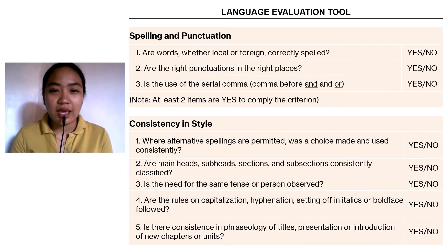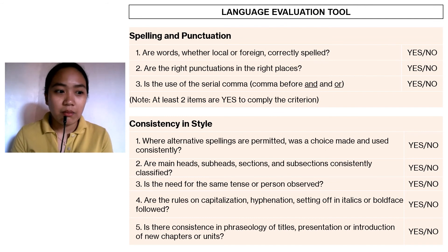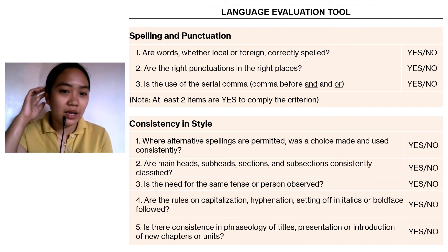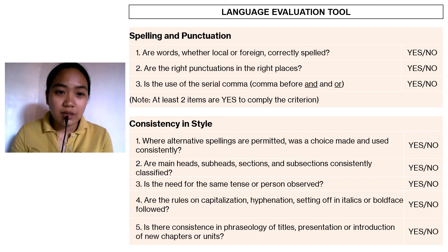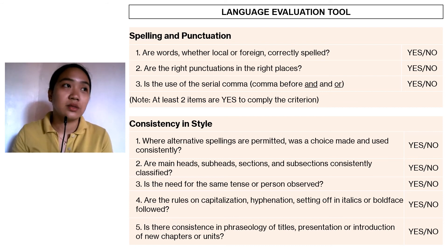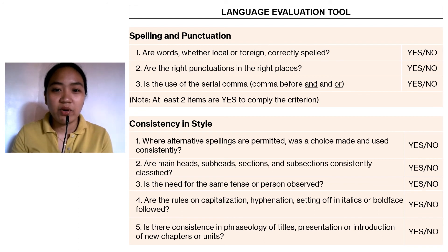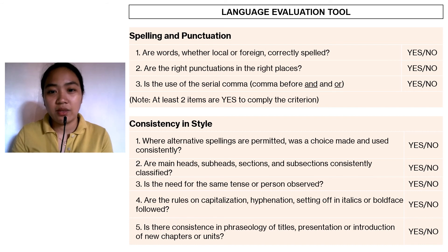Next, we have spelling and punctuation. Are words, whether local or foreign, correctly spelled? In English, MS Word will highlight and underline misspellings in red, making it easy to identify errors. Are the right punctuations in the right places — comma, question mark, period? Is the use of serial comma before 'and' or 'or' correct? At least two items must be yes to comply with the criterion.